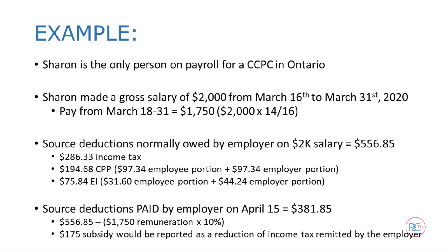However, instead of remitting the full $556.85, the employer would instead remit $381.85. That is, they would subtract 10% of $1,750 — being the remuneration applicable after March 18th — from the $556.85. This $175 subsidy should be recorded in the employer's books as a reduction of income tax remitted. But the employee would still show $286.33 of income tax taken off their pay, like normal. CRA does indicate that CPP or EI deductions cannot be reduced by the amount of the subsidy.